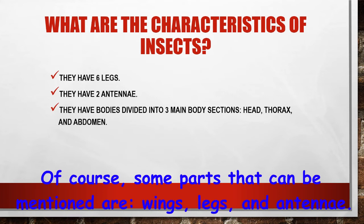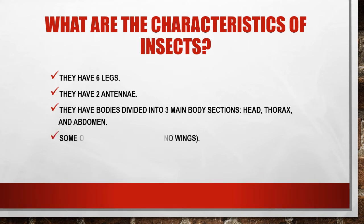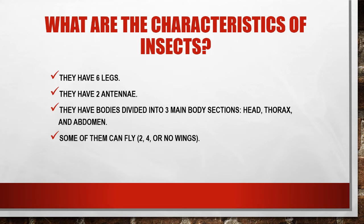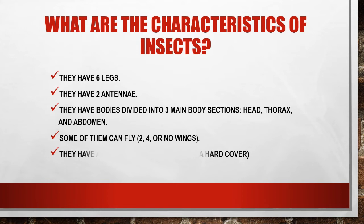Some parts that can be mentioned are wings, legs, and antennae. Number four: some of them can fly — two, four, or no wings. And the last characteristic is the presence of an exoskeleton, which is a hard outer cover.